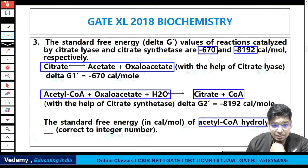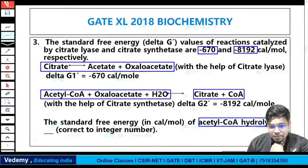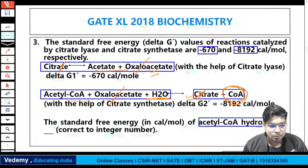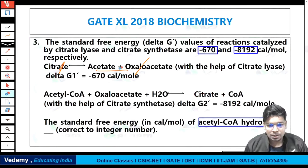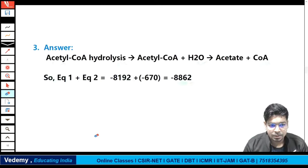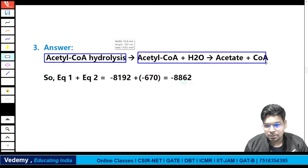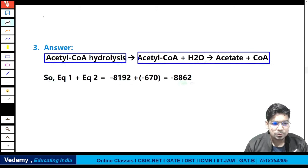Now applying this to acetyl-CoA hydrolysis: equation 1 has citrate converting to acetate + oxaloacetate (delta G1 = -670). Equation 2: acetyl-CoA + oxaloacetate + H2O → citrate + CoA (delta G2 = -8192). If we sum both equations, oxaloacetate cancels out and citrate cancels out, giving the acetyl-CoA hydrolysis equation: acetyl-CoA + H2O → acetate + CoA.